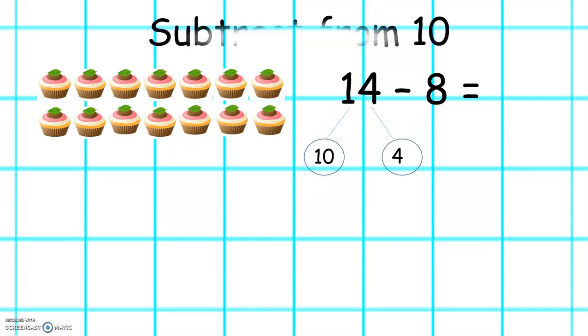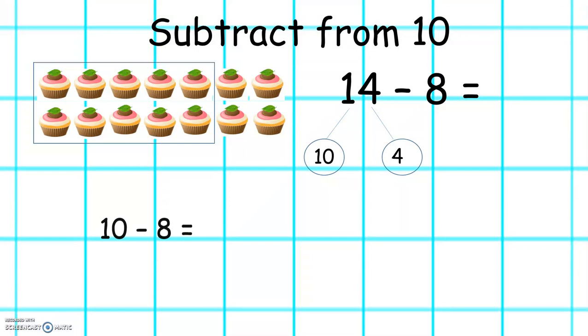Another method we can use is to subtract from 10. Here we have to solve 14 take away 8. Now if we partition 14, it is 10 and 4. Let's make 10 and take away 8.